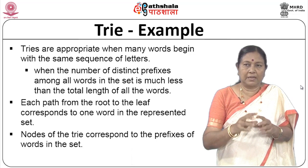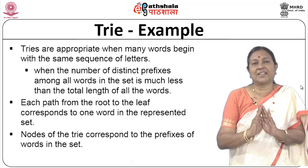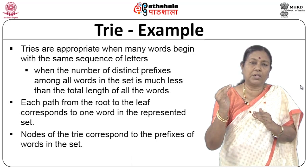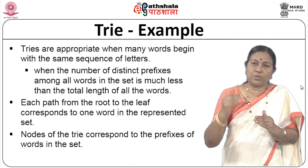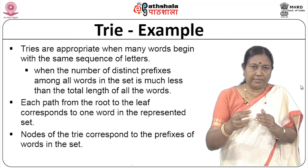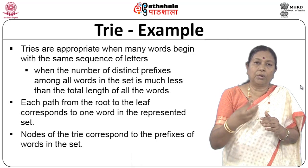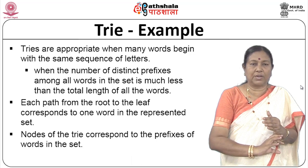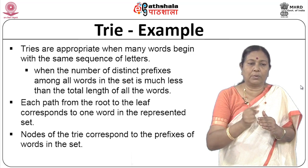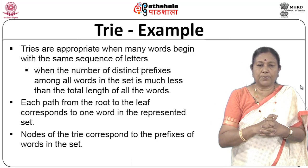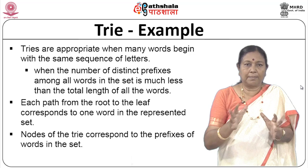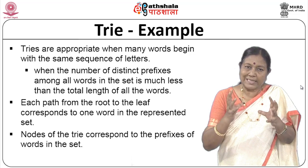Each path from the root to a leaf corresponds to one word of the represented set. Unlike before, where branching leads to an actual key stored at a leaf — here, the path from root to leaf gives you the actual word. Nodes of the trie correspond to prefixes of the words in the complete set.